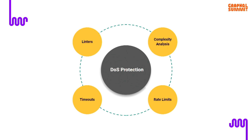Denial of service protection in GraphQL — some of this actually comes by default. For example, linters — generally this is part of the specification. There's also complexity analysis, which is not enabled by default in most cases. And there's more generic functionality like timeouts and rate limits, which is not just applicable to GraphQL, but which you need to pay attention to for GraphQL-specific stuff.